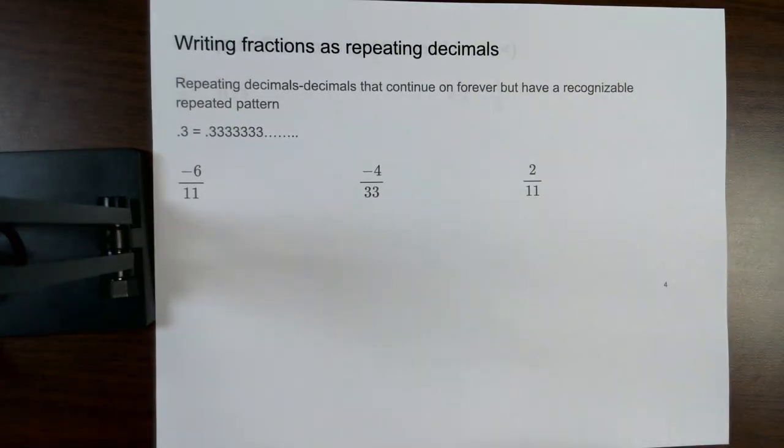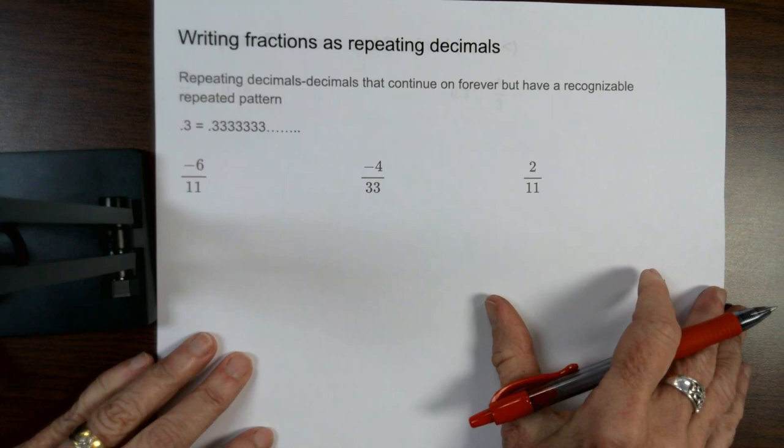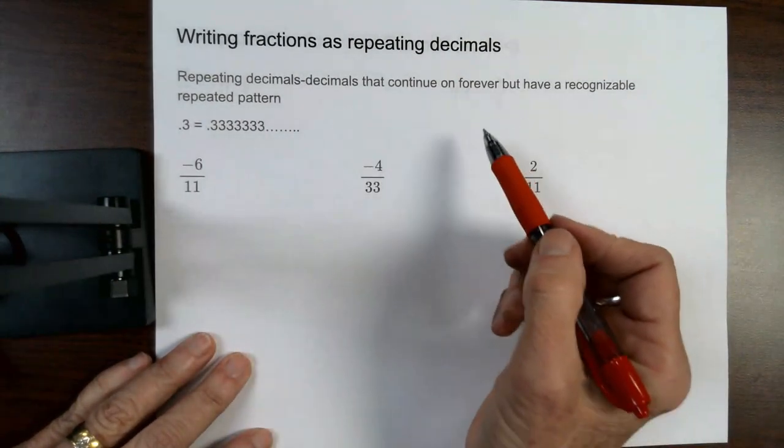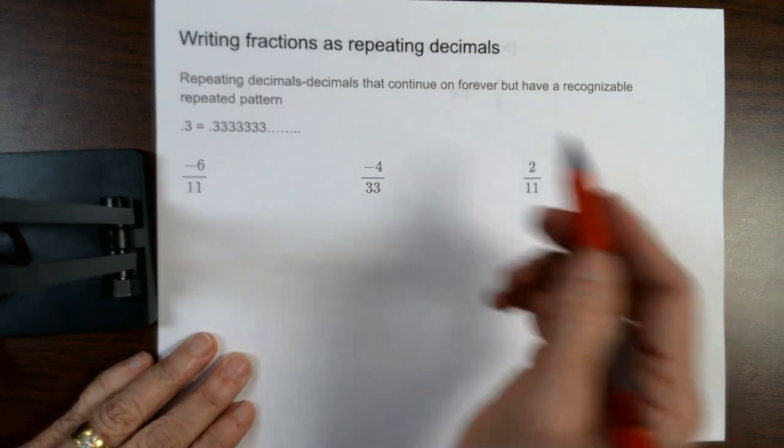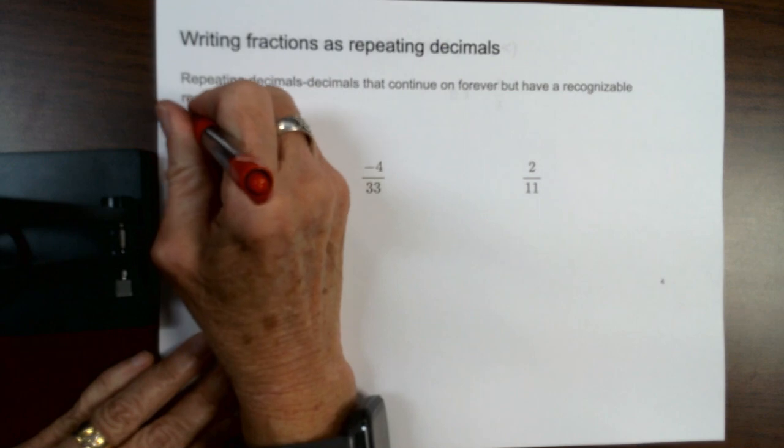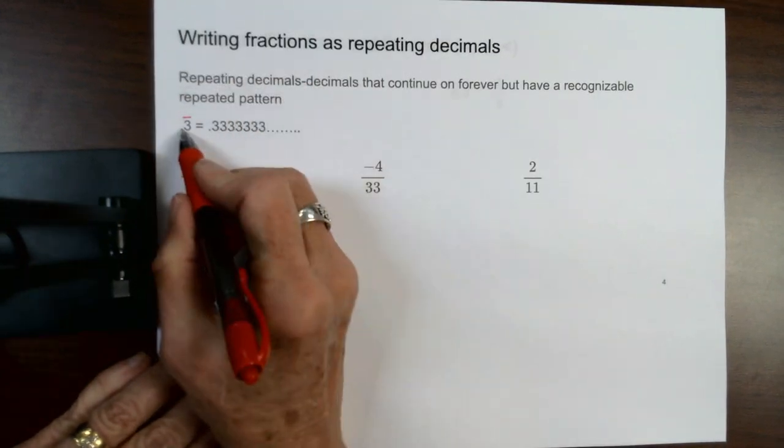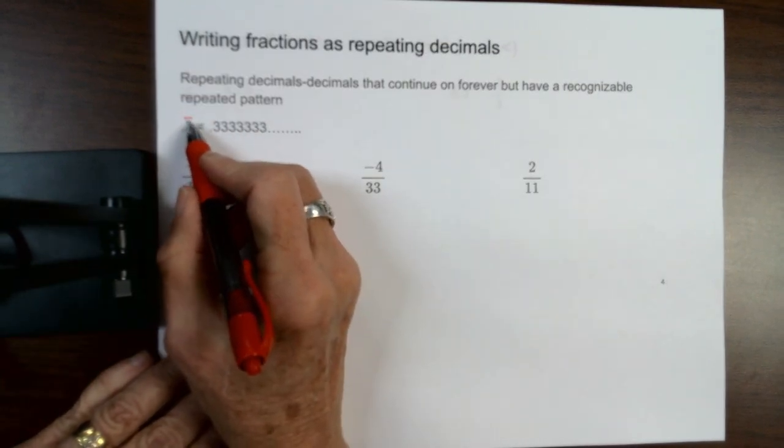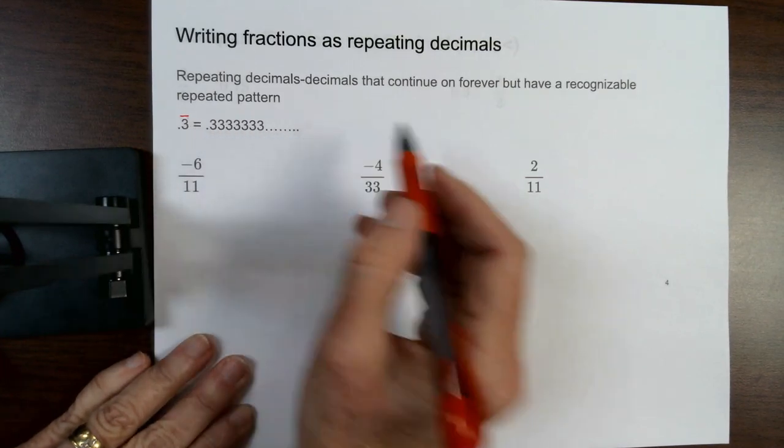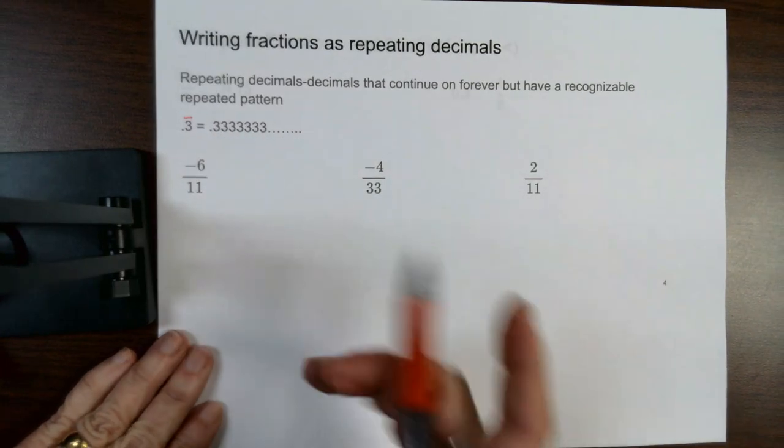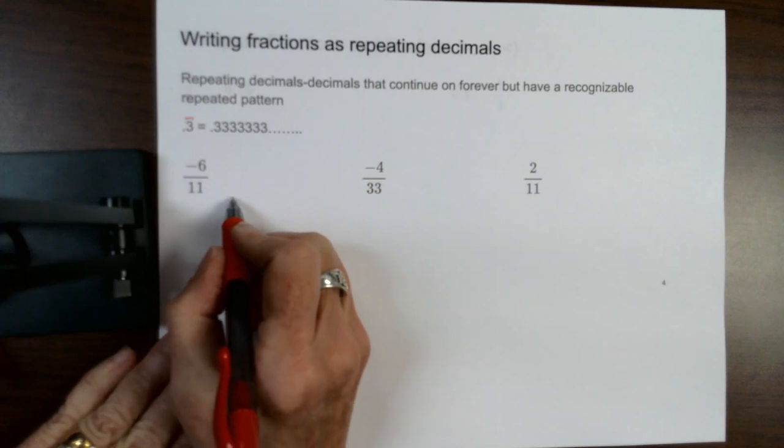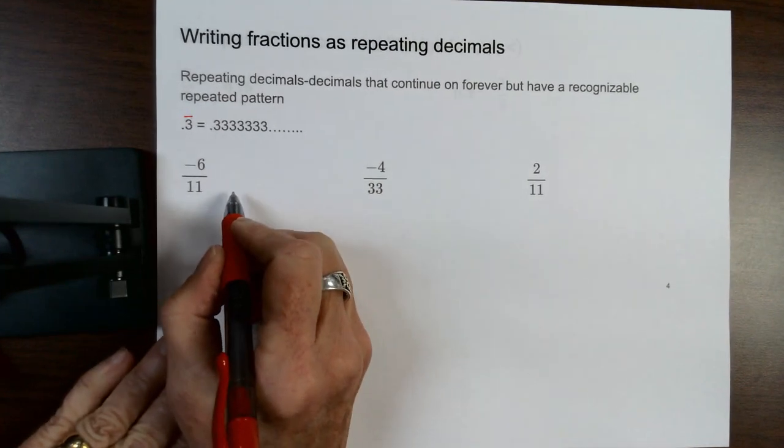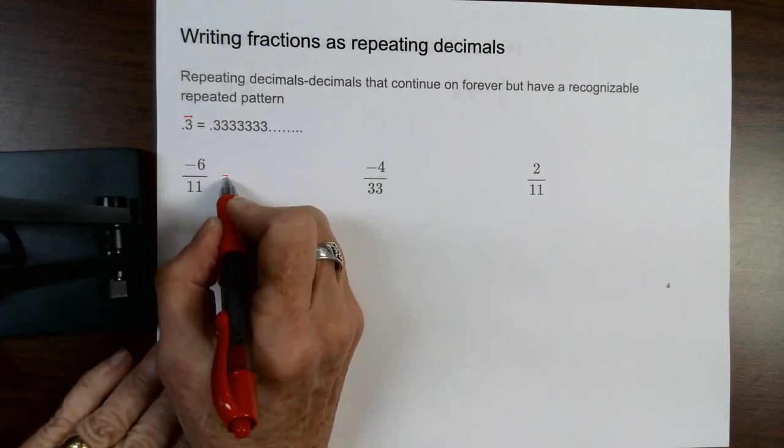You also have repeating decimals which are decimals that continue on forever but have a recognizable repeated pattern. So a repeating decimal is a number with a line over it which shows me that the 3 continues on forever and ever. These are going to be ones that give you repeated decimals. So you go until you recognize the pattern.